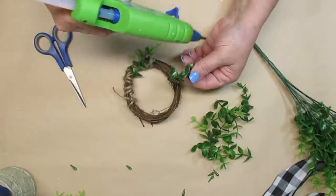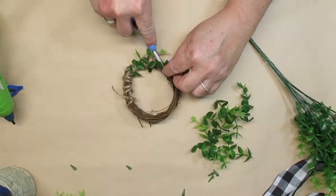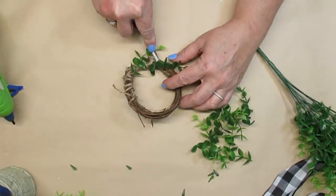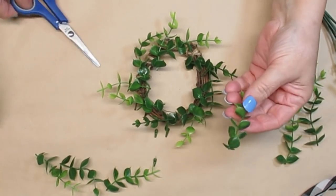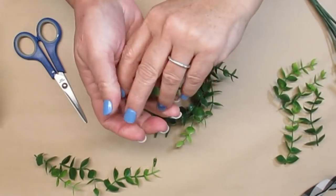If you've seen me make wreaths before, you'll know that I like going all in one direction. So I'm going to start at the bottom and hot glue the first branch on and then I'm just going to continue my way all the way around until I get back to the beginning.